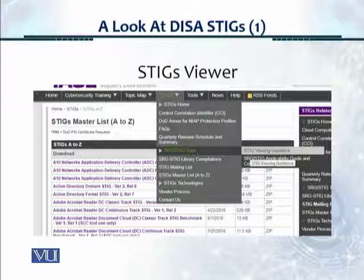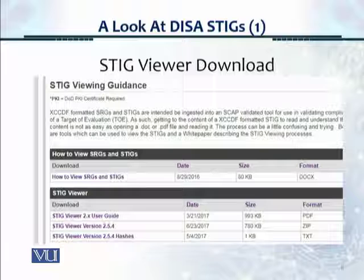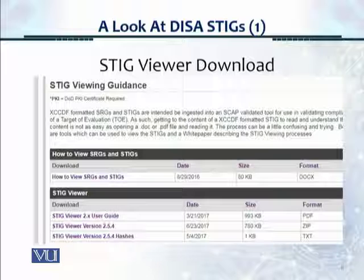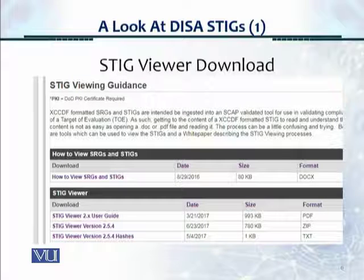This is the STIGs viewer. You click on the website, click on the STIGs drop-down menu, go to SRG STIG tools, and this opens a new screen. You go to STIG viewing guidance and get the STIG viewer download screen. There's a row which says STIG viewer version 2.5.4, dated 23rd of June 2017 — it's a 780 kilobyte zip file. That's what we're going to download.